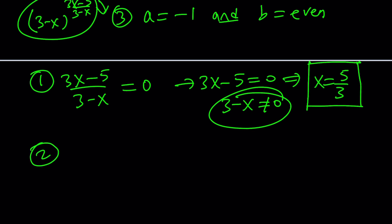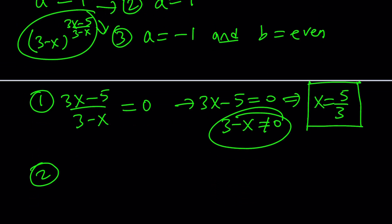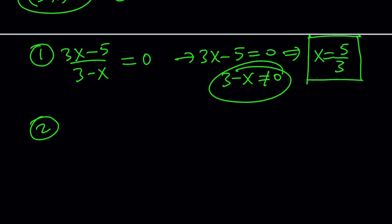Anyways, number 2. What is case number 2? a is equal to 1. a is the base, remember? So 3 minus x equals 1. We don't really need any other requirements. And this means x is equal to 2. Perfectly valid solution, because if you have 1 at the base, you're good, right?